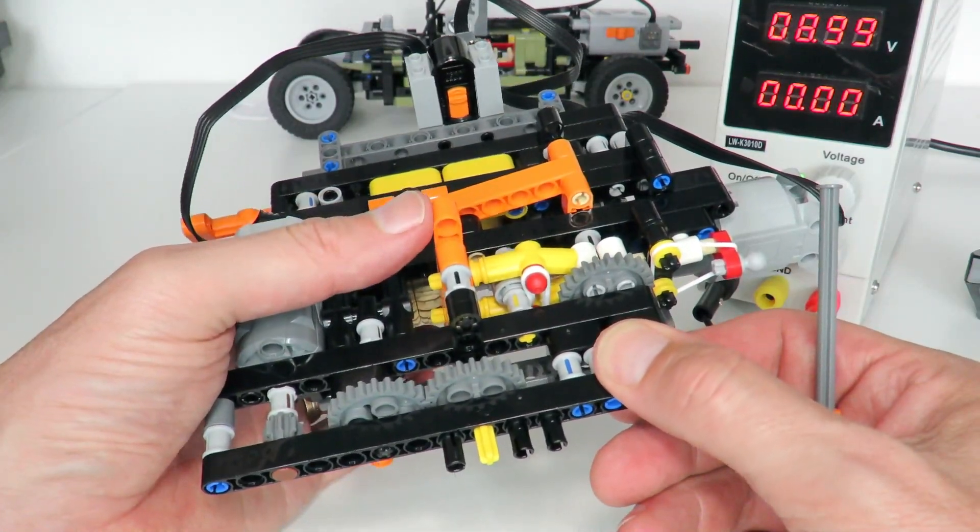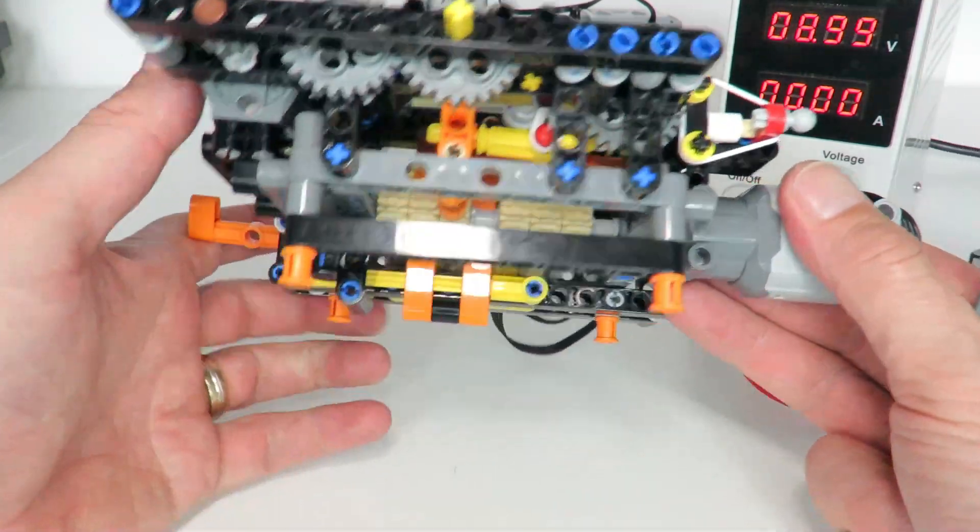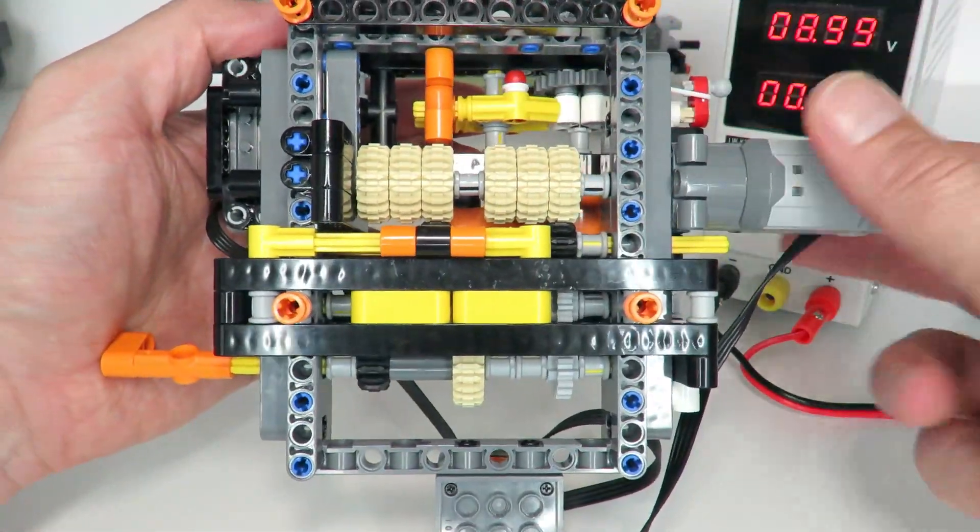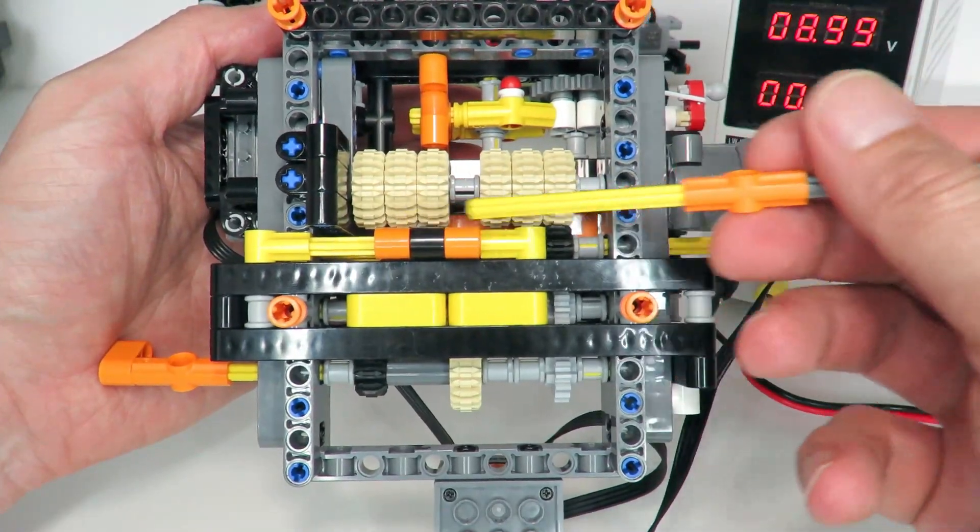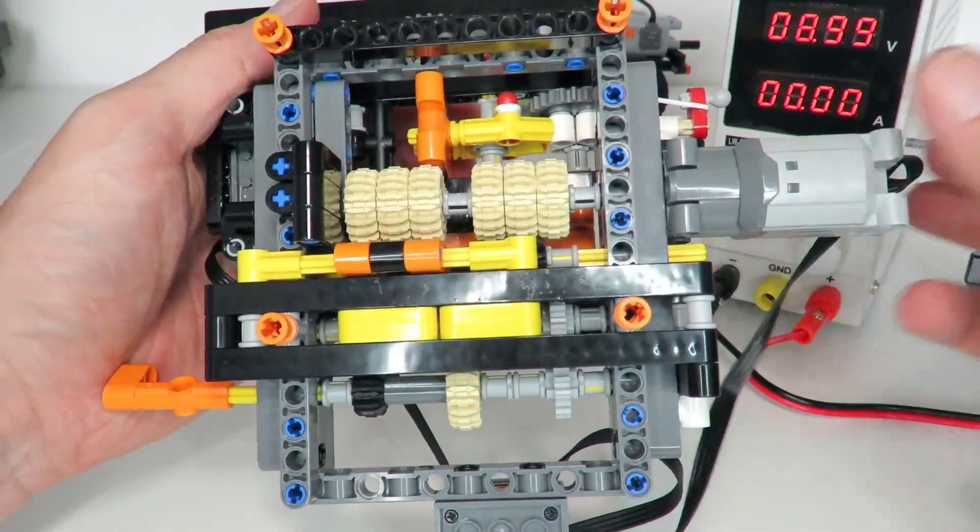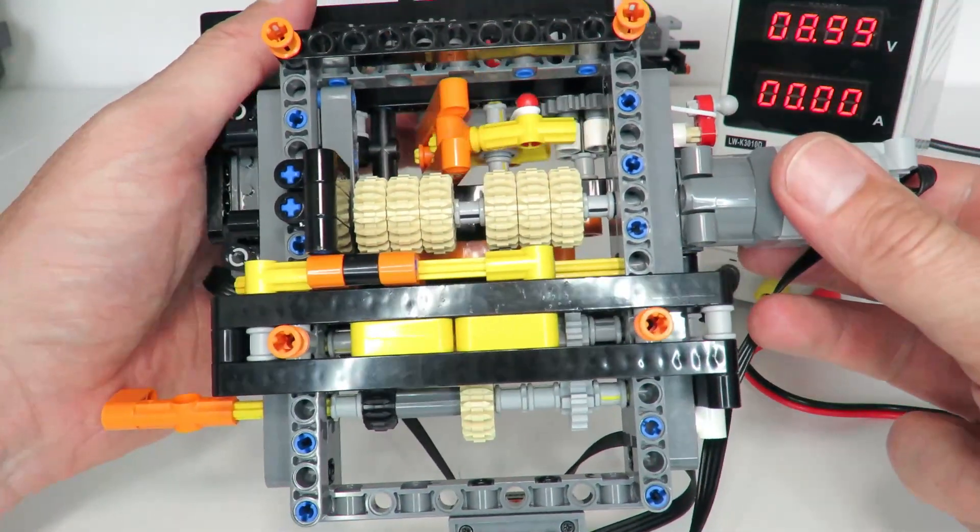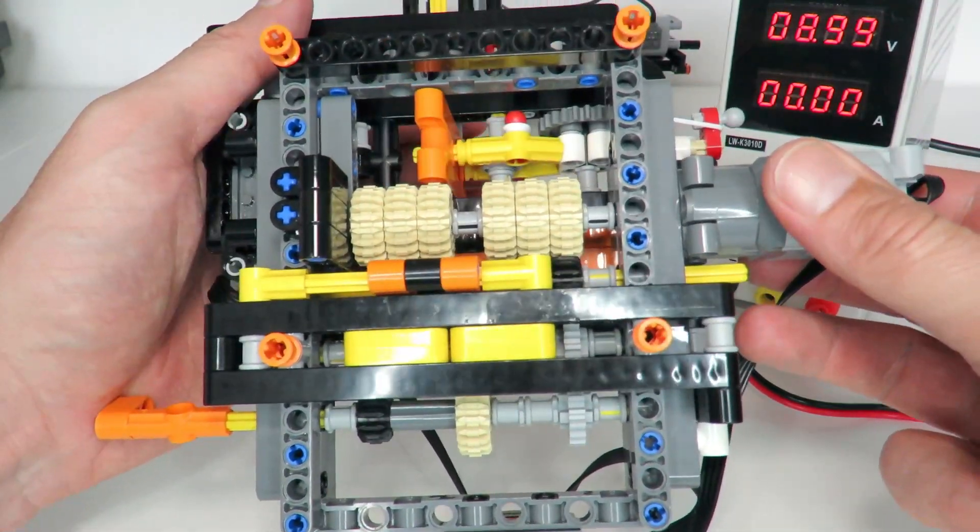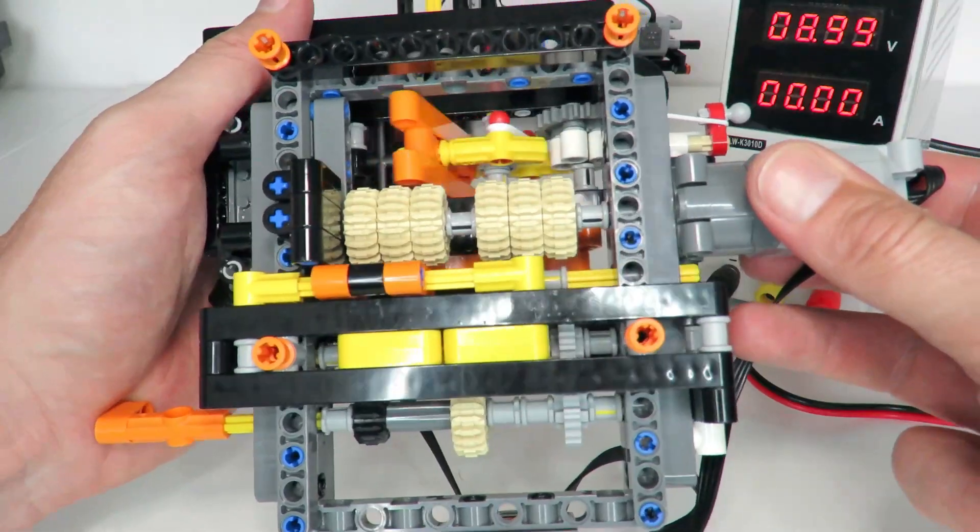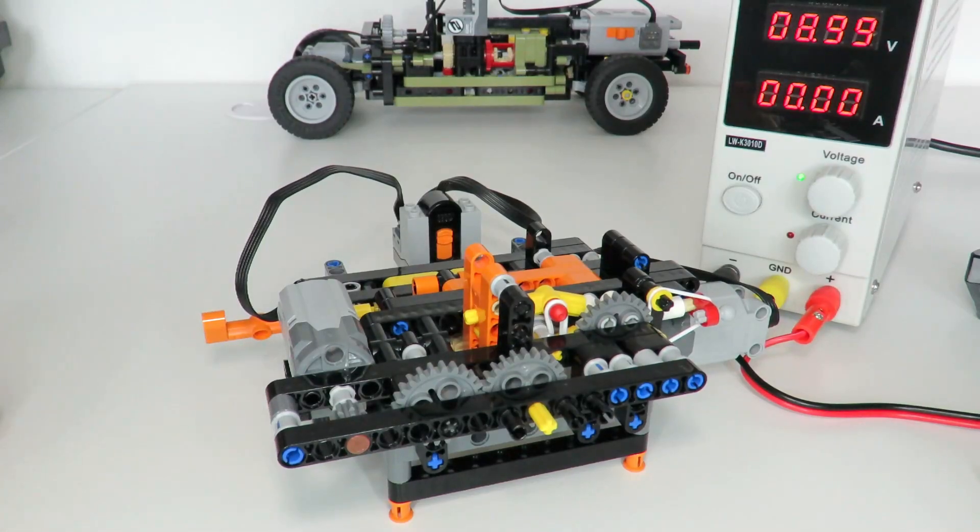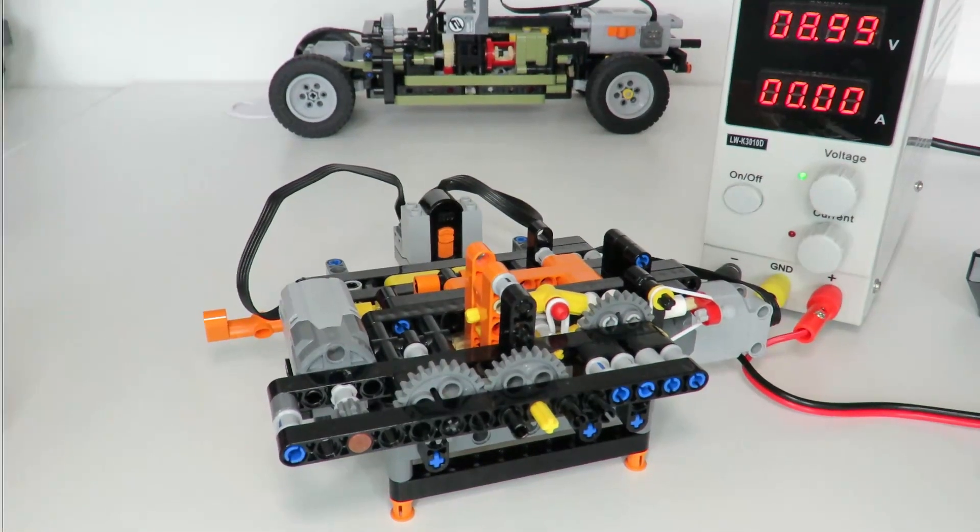So looking at that from underneath here we have got that stepper mechanism and that is driving that part that moves the axle across with the different gearing mechanisms. So one, two and three, one, two and three. So that is the manual way of doing it. I will now connect it up to the motor and demonstrate the gear changing in action.